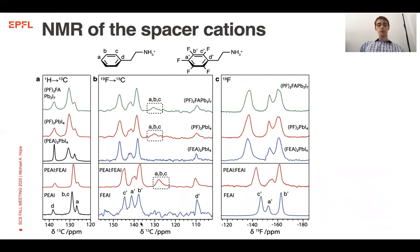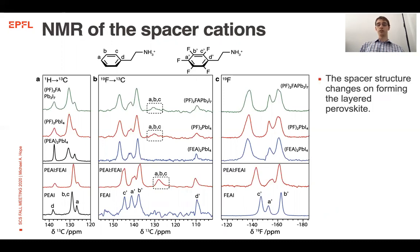From the bottom row I'm showing the organic spacer salts. When we just mix them together we get minor changes in the spectrum. However, when we then form the layered perovskites — shown on the top half of this panel — we see distinct chemical shifts which indicate that the structure has changed on forming a perovskite.